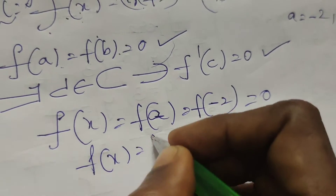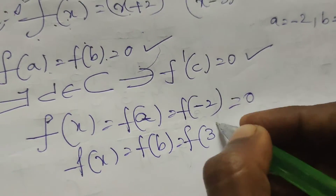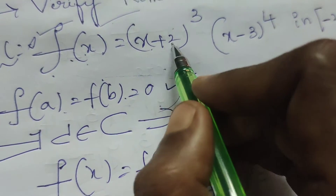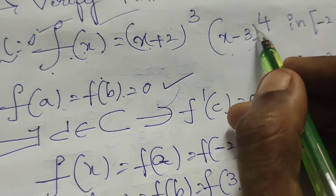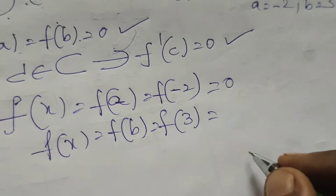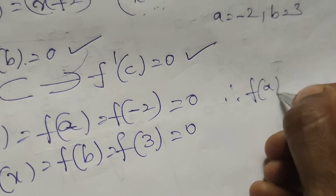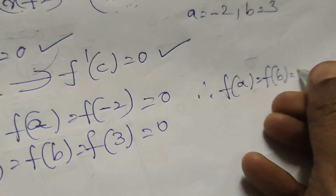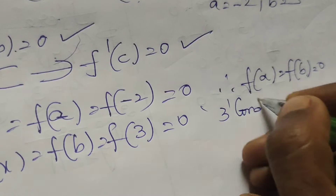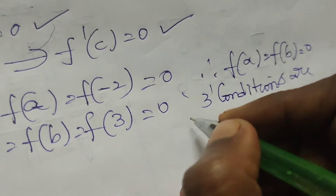Next, calculate f(b) = f(3). Substituting x = 3: (3+2)³ · (3-3)⁴ = (5)³ · 0 = 0. Therefore f(a) = f(b) = 0. All three conditions are satisfied.